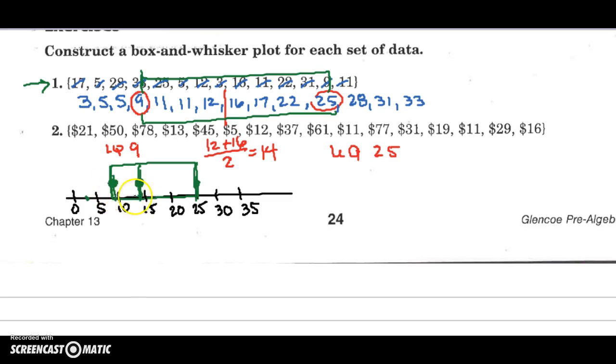So there's a bigger gap between 25 and 14. There's a bigger gap than between 14 and 9. That's why the line is not in the center. It's not supposed to be. Now we're ready to place our whiskers.